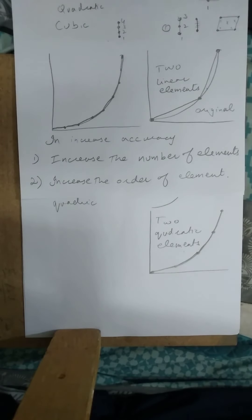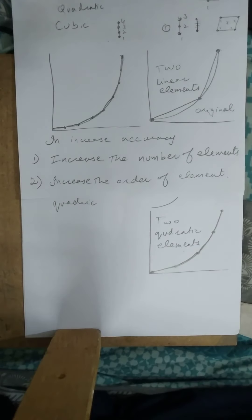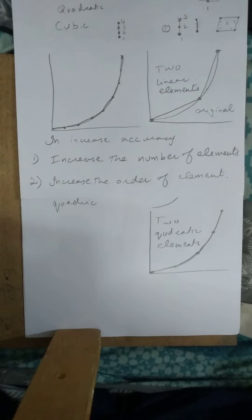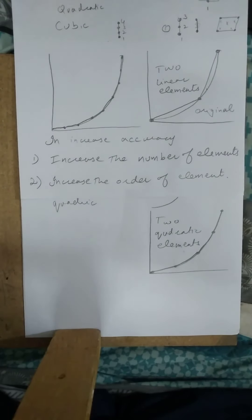In solving using shape functions, we can use quadratic shape functions — quadratic interpolation — to get more accurate results. Quadratic results are more accurate than linear. We can also use cubic interpolation or cubic shape functions, which will be even more accurate than quadratic and linear.